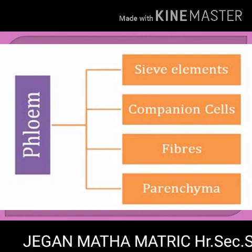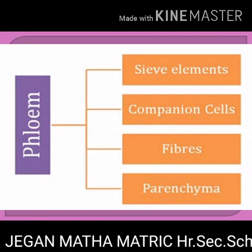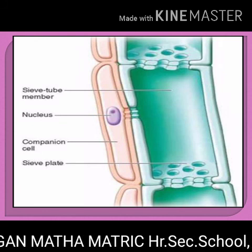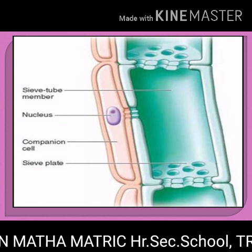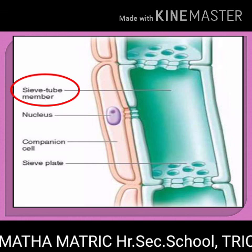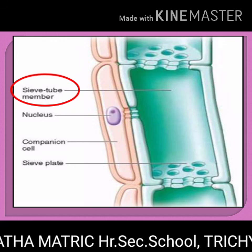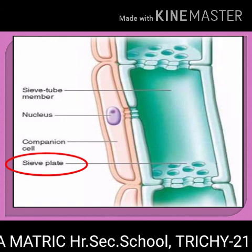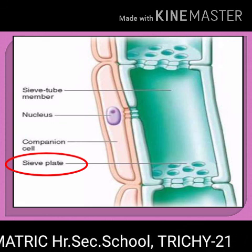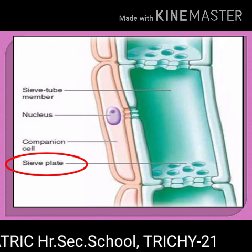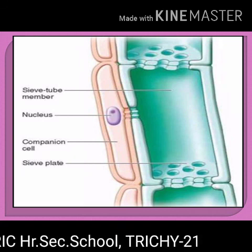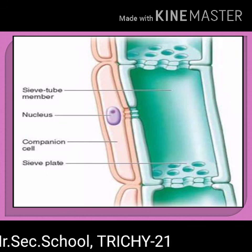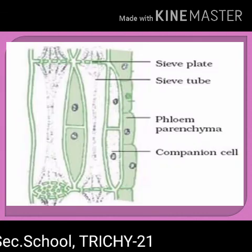Phloem consists of the following elements: sieve elements, companion cells, phloem fibers, and phloem parenchyma. The conducting elements of the phloem are collectively called sieve elements. Sieve tubes are elongated, tube-like, slender cells placed end to end. The transverse walls at their ends are perforated — having small holes — and are known as sieve plates. The main function of the sieve tube is translocation of food, meaning passing food from leaves to the storage organs of the plant.